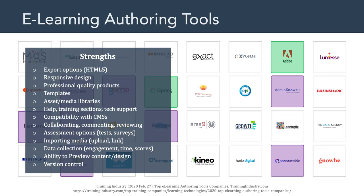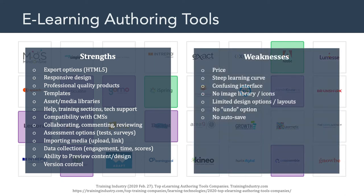Those were some of the strengths you might look for in an authoring platform. Now, some of the weaknesses that many of you pointed out — the big one of course was price. Even though this is a crowded space and everyone's trying to create a one-stop shop for content creators, hosting all of that and developing these platforms so they work on different operating systems and providing asset and media libraries is expensive. You can see that reflected in the monthly and annual prices. Another weakness is some of these tools have really steep learning curves — these are not for beginners. Some of you pointed out they can have confusing interfaces.